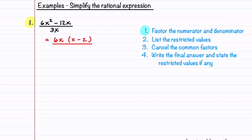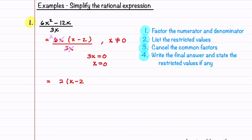There's only one term in the denominator, so we don't need to factor it. Now let's list the restricted values. The restricted values are where the denominator 3x is equal to zero, so x is equal to zero, and we write this as x is not equal to zero. The next step is to cancel the common factors. We see that there's an x common to both numerator and denominator, so we cross it out. Then we notice that 3 divides into 6 two times, so we cross out the 3 and make the 6 a 2. The final answer is 2 times the quantity x minus 2, with the restriction that x is not equal to zero.